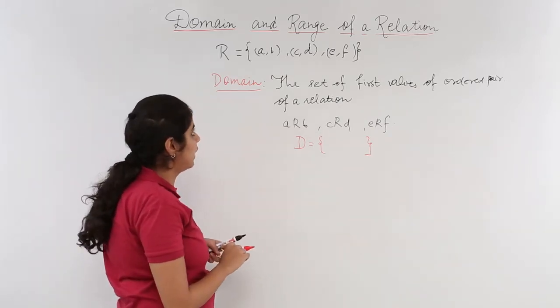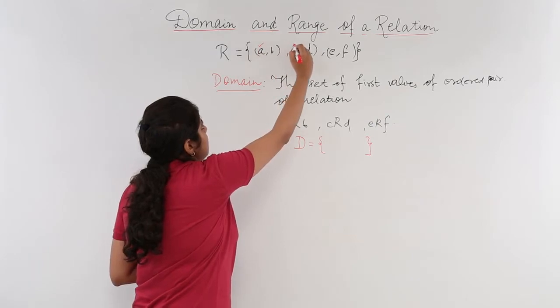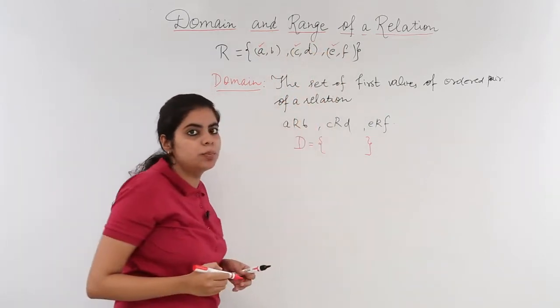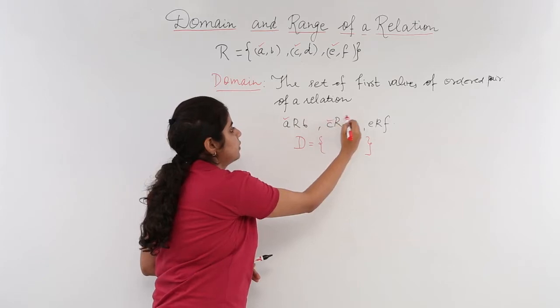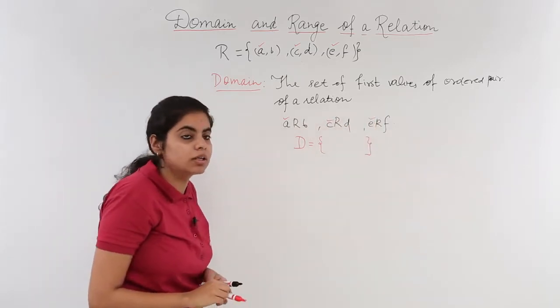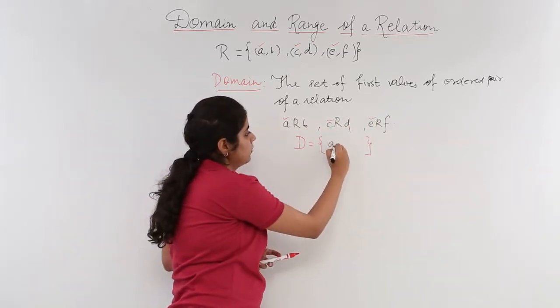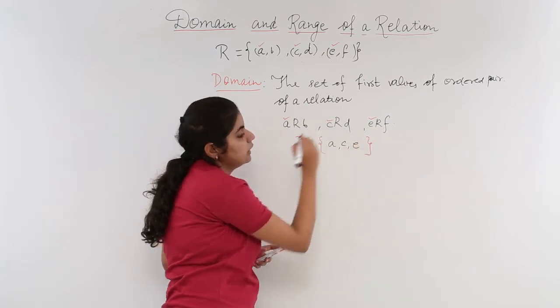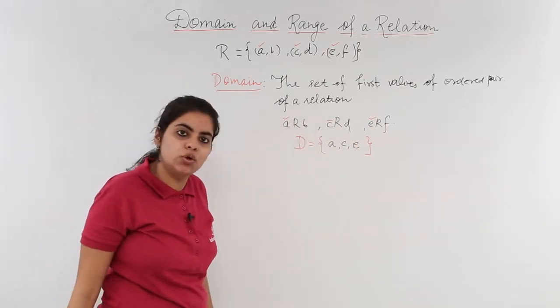So what is the value? The value is the first ones out of these three ordered pairs or from here also you can see the first ones. That is what? That is a, c and e. This is domain.